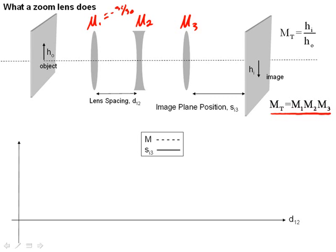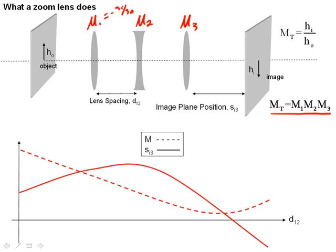Now that we're able to calculate using real numbers an actual image position for an n-lens optical system and calculate the magnification, we can start to define what a zoom lens is. Let's take a look at that for a couple of cases.